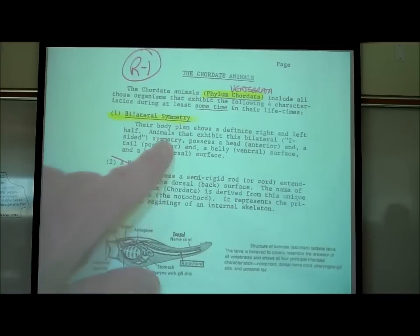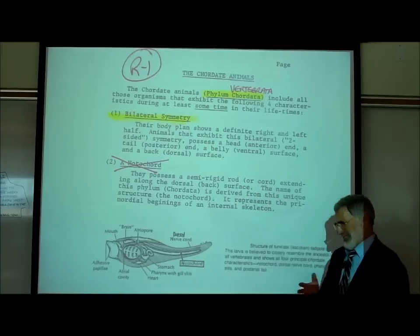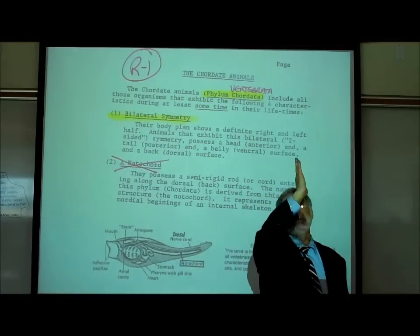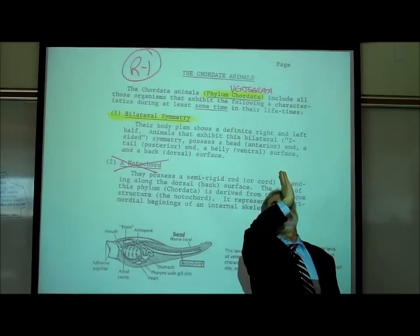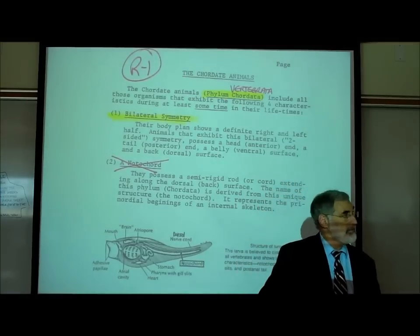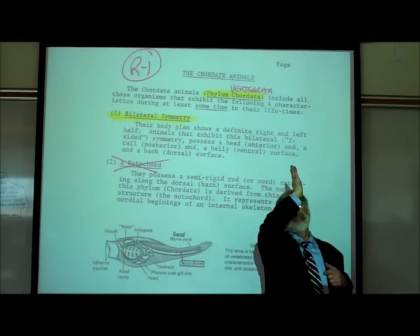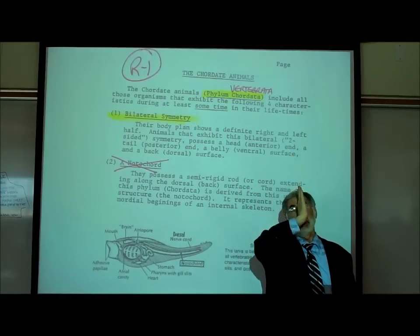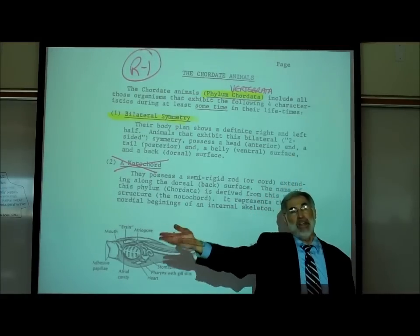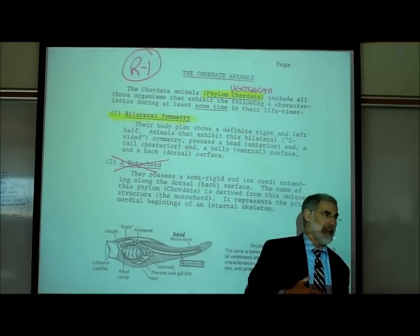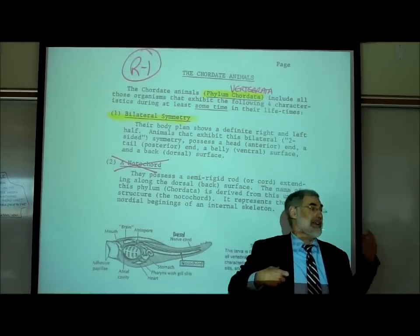What are the characteristics? Bilateral symmetry — you can divide them into an equal right and left half, like us. If you imagine an imaginary cut right through my body, I've got a right arm and a left arm, a right eye and a left eye, a right nostril and a left nostril, a right lung and a left lung.